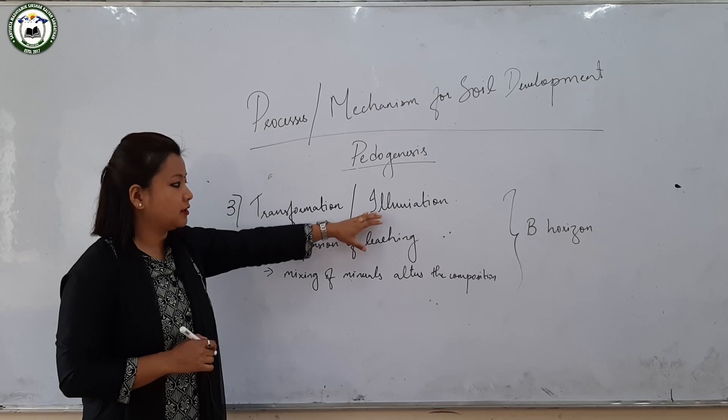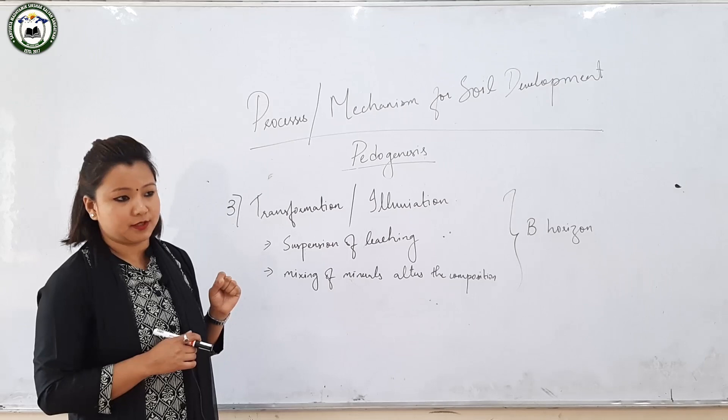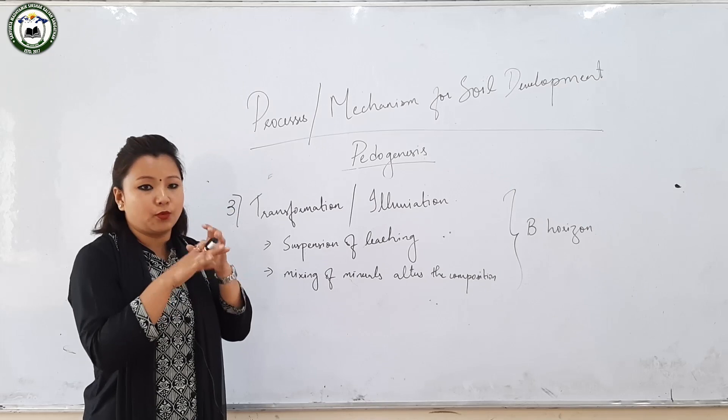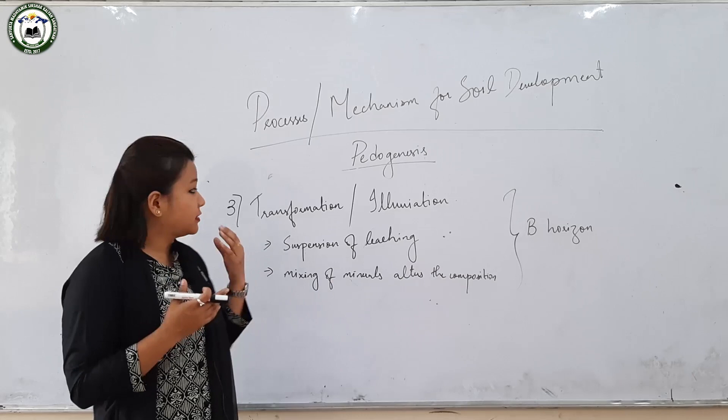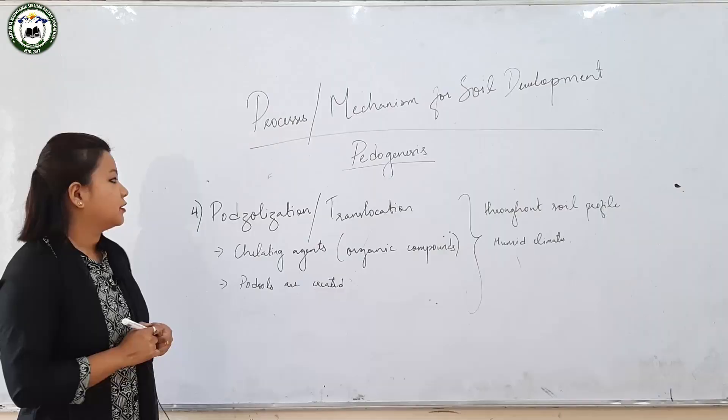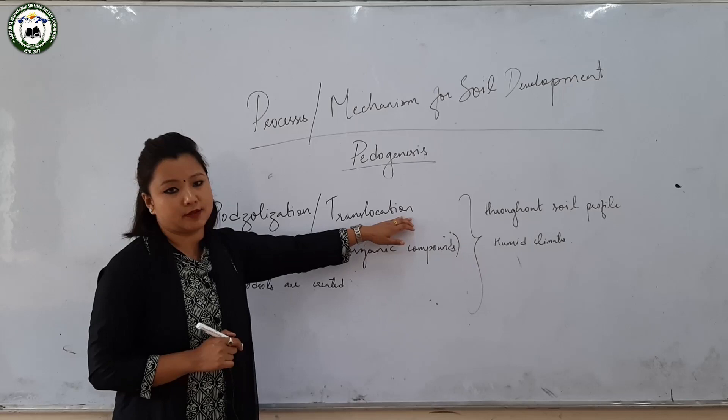Another process is transformation and illuviation. In transformation and illuviation, the leaching stops and accumulation of materials prevails. When there is accumulation of materials, it gets mixed with the materials already present in that layer. The mixing of materials alters the composition, and this is why it is regarded as transformation. It is profound in the B horizon.